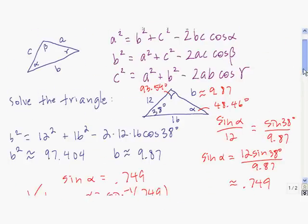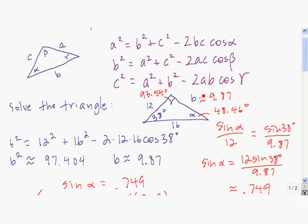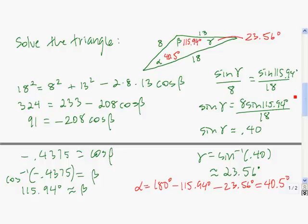Let me recap the two strategies. In the side-angle-side case, we first found the third side using the law of cosines. Then of the two remaining angles, we found the smallest one using the law of sines. Then we found the third angle by subtracting the two known angles from 180 degrees. In the side-side-side case, we first found the biggest angle using the law of cosines — the biggest angle is opposite the largest side. Then we found one of the remaining angles using the law of sines, knowing they must be acute so the angle sum stays within 180. Then we found the third angle by subtracting from 180 degrees.